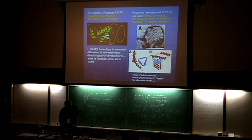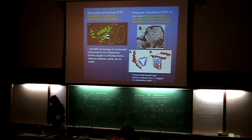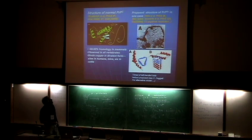I want to come back now and discuss something which ties together domain swapping and these beautiful monomeric beta-helix structures, and that requires me to talk about the prion again. This is the structure of the normal cellular form of the prion, which I showed you yesterday.